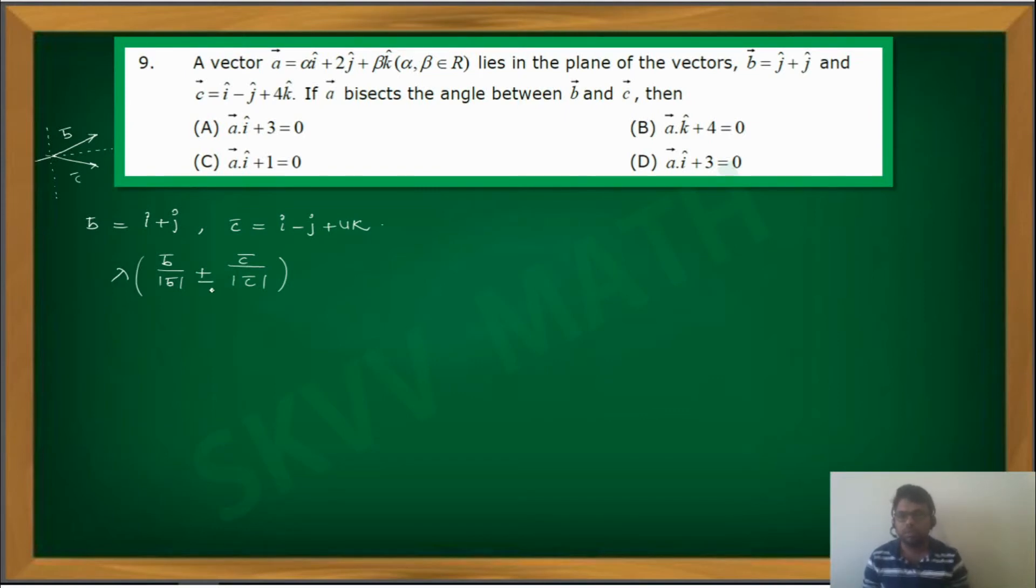So we suppose this is lambda into. We have to do in both cases. We will try with the first one, lambda into b bar by mod b bar plus c bar by mod c bar, which is the angular bisector, the vector which bisects angle between b bar and c bar.